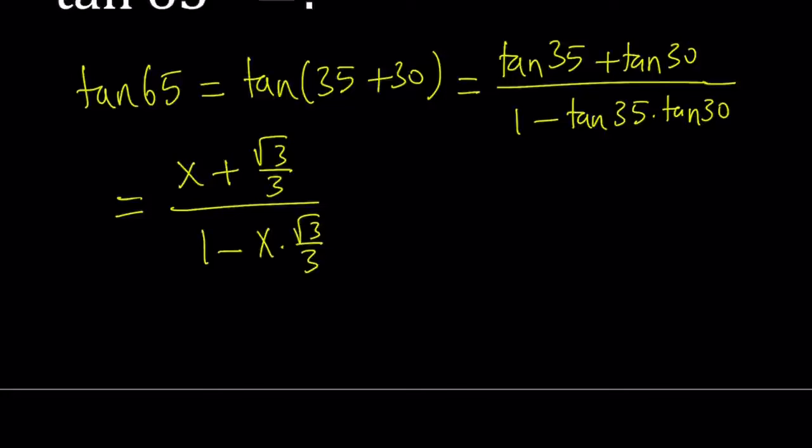And the same thing at the bottom, you get x times root 3 over 3. Awesome. Is that the answer? Let's simplify a little bit. Make a common denominator. You get 3x plus root 3. And at the bottom, you get 3 minus root 3x. Okay, that was easy. But we're going to take it to another level.